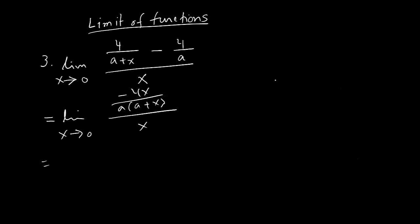So I have the top portion is negative 4x over a times a plus x times. Now this one, like x over 1, it will go like this, it will flip. X, x cancelled out.